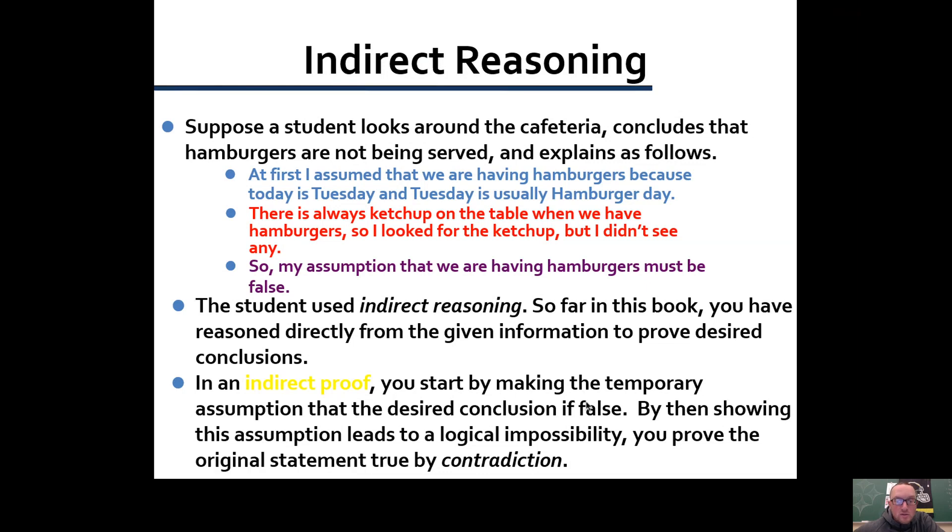By then showing this assumption leads to a logical impossibility, you are proving that the original statement is true by contradiction. So when you use indirect reasoning or an indirect proof, you are actually proving something by contradiction. It can also be called proof by contradiction as well.